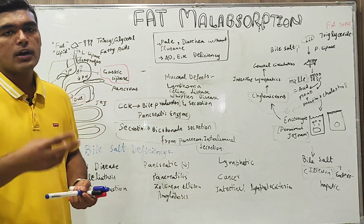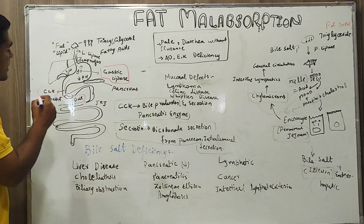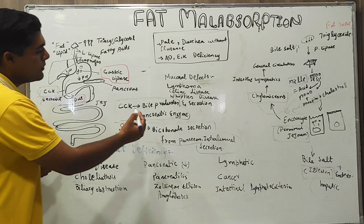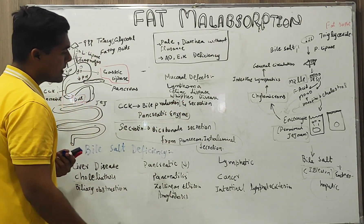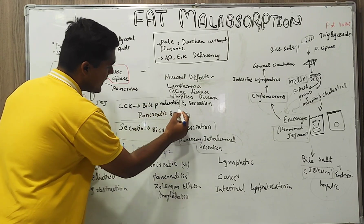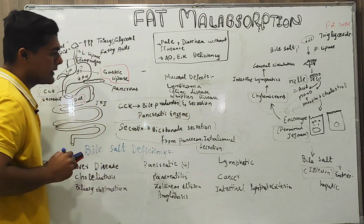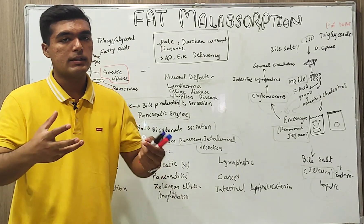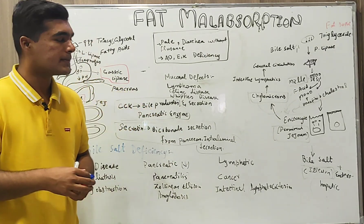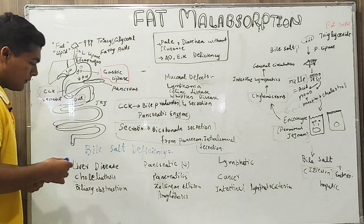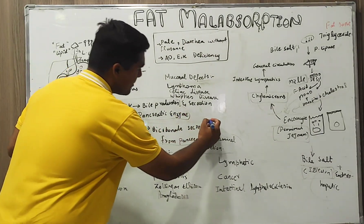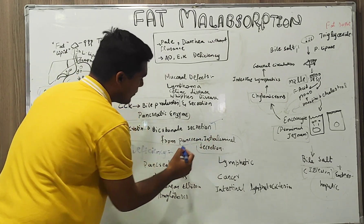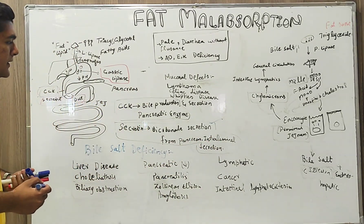What happens in the duodenum — we have two hormone secretions: cholecystokinin and secretin. Cholecystokinin plays its role in bile production as well as in secretion of pancreatic enzymes. Here, the pancreas and gallbladder also involve themselves in the activity of fat digestion. Secretin plays its role in bicarbonate secretion as well as pancreatic intraluminal secretions.